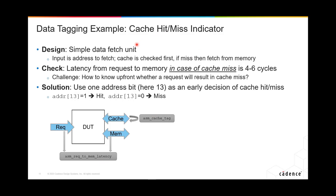Another example is a data fetch unit. The input is the address to fetch — the cache will be checked first, and if there's a miss, it'll have to be fetched from external memory. The check requires that the latency from a request to memory in the case of a miss is four to six cycles.